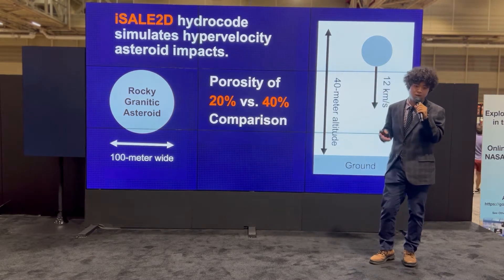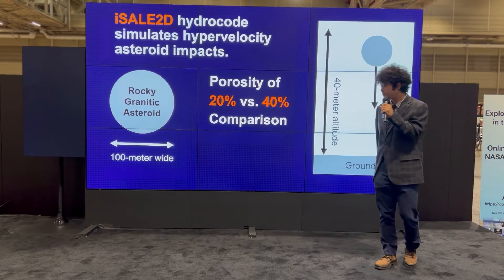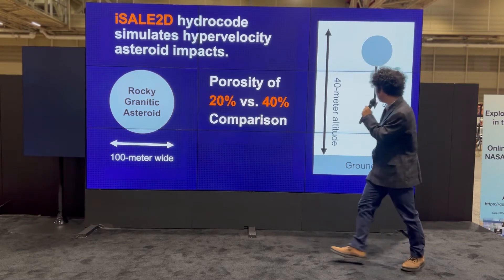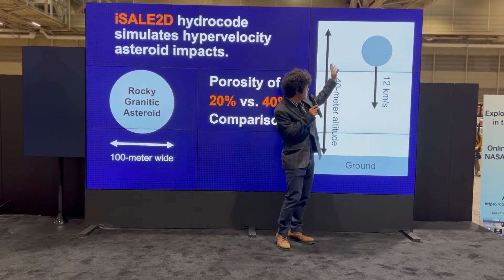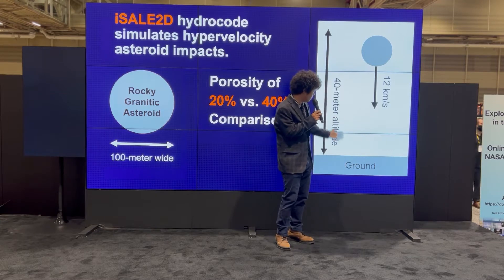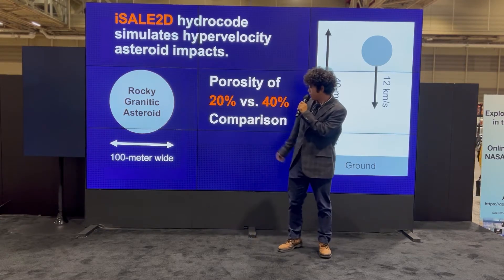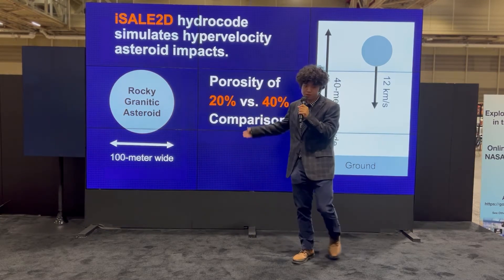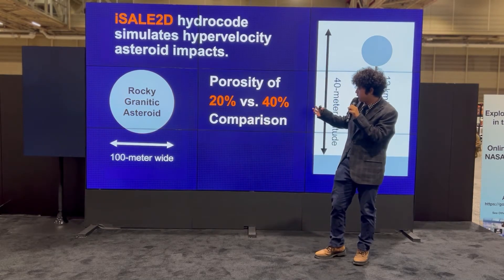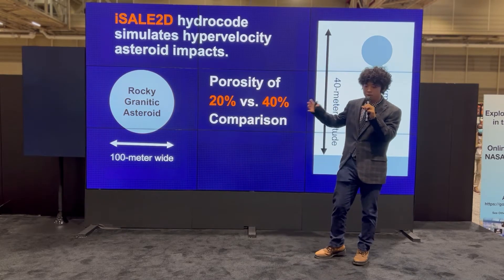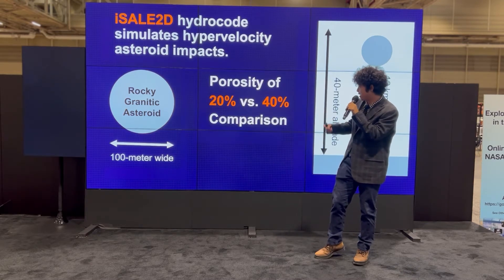Hydrocode is a computational simulation that looks at cells of each material. You can see I have an asteroid, air, and a ground. The asteroid is made of granite, and you can choose the density, speed, and really all the strength of materials for the asteroid.